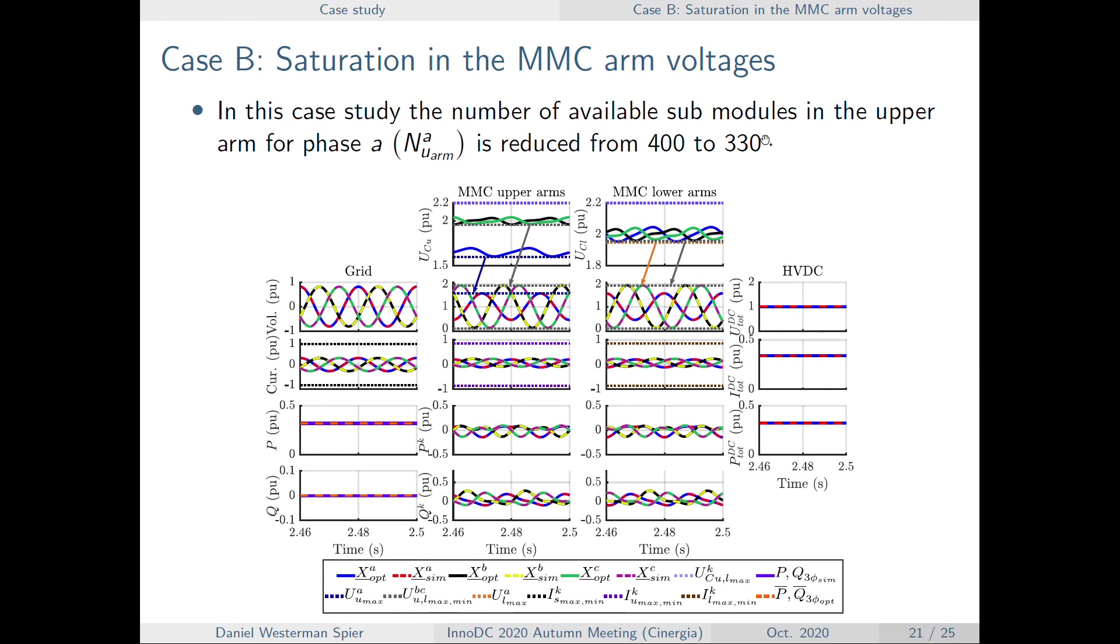In this case study, we are reducing the amount of available submodules in one arm from 400 to 330, and then the optimization will reduce the voltage that we can apply to this arm in order to avoid over modulation.